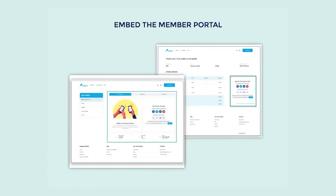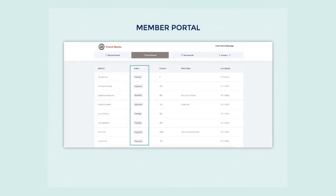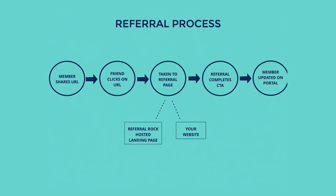The share block can also be embedded directly into your website or app so that members can interact with your referral program as they are interacting with your business. The third thing that makes our member portal unique is that it keeps members updated on the status of their referrals and where each referral is in your sales process. As members share their unique referral URL, they'll be directing people to the referral page of your choosing. Your referral page can either be a landing page from your own website, or you can build a landing page using our landing page editor.